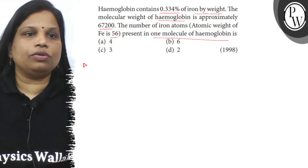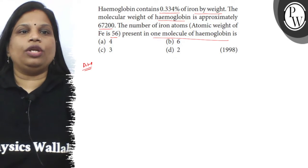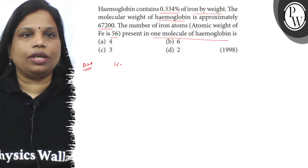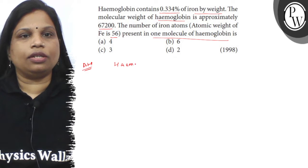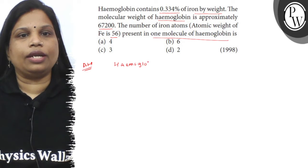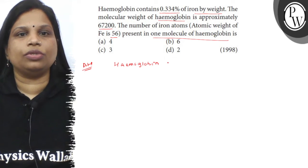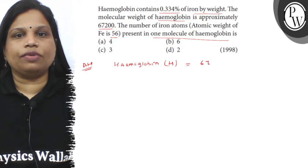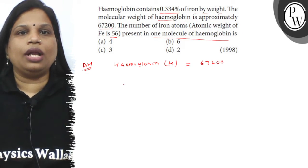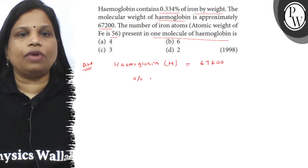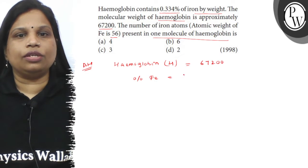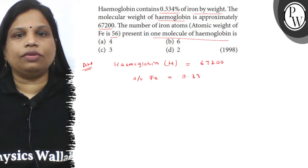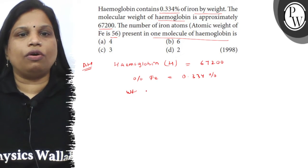So the molecular weight of hemoglobin is taken, it is hemoglobin and its molecular weight, suppose it is H, its molecular weight is 67200 and the percentage of iron is 0.334 percent.